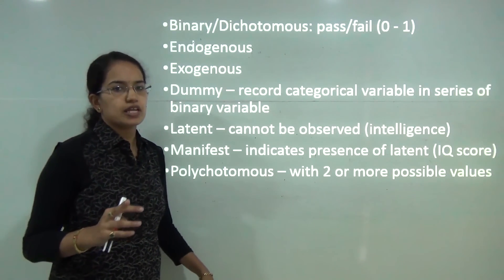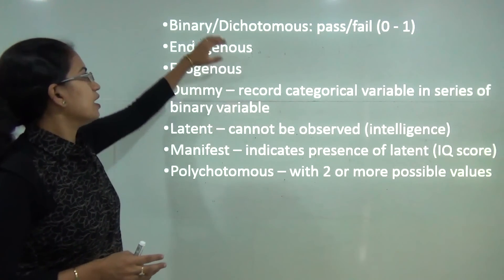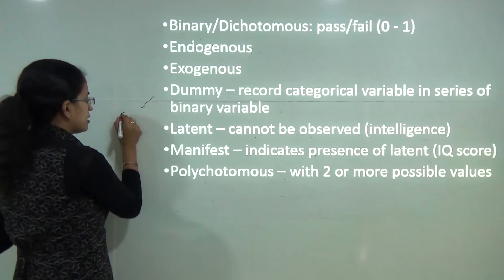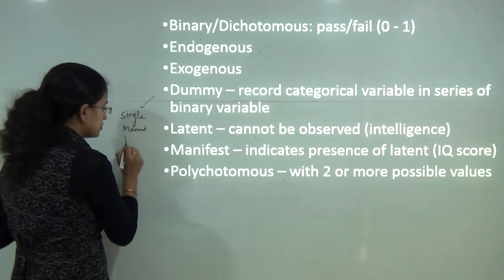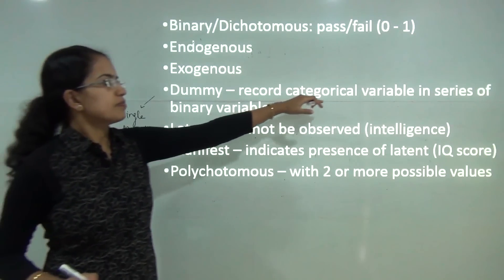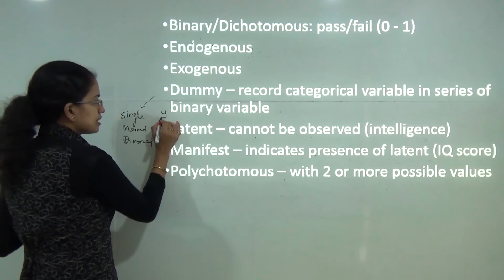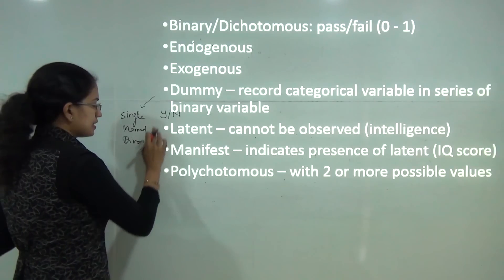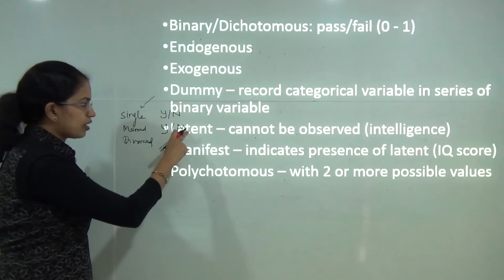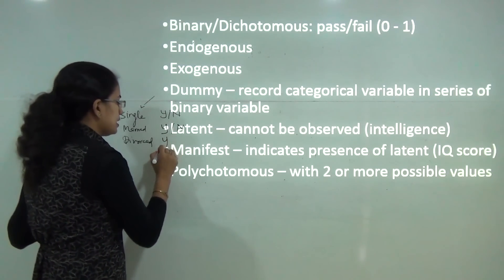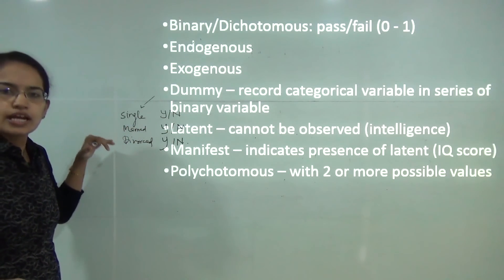The dummy variable is very important to understand. It is a kind of categorical variable which you convert into a binary variable. For example, students who are single, married, or divorced — three categories. Each category is divided into binary values: single yes or no, married yes or no, divorced yes or no. All those falling under no for single would be either married or divorced, and so on. Each category has a binary yes/no value attached to it.